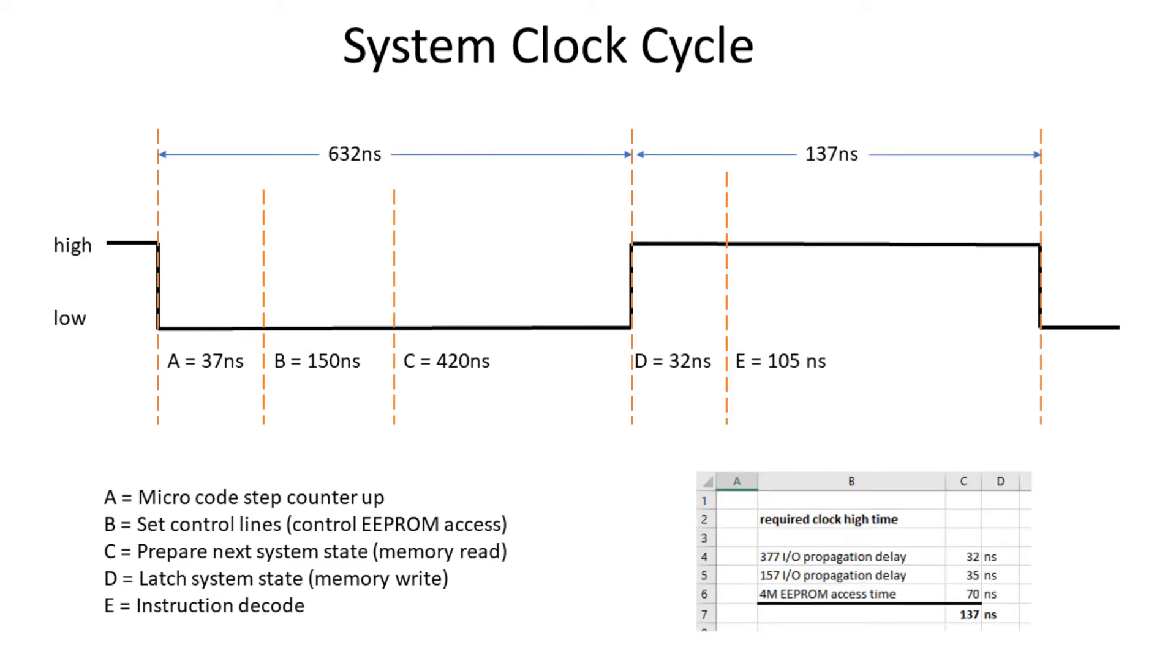A similar calculation can be done for the high time of the clock. And one can see that the latch time is about 32 nanoseconds for a 377 chip. And the time to decode the instruction is about 105 nanoseconds. And that makes a total of 137 nanoseconds for the high phase of the clock.